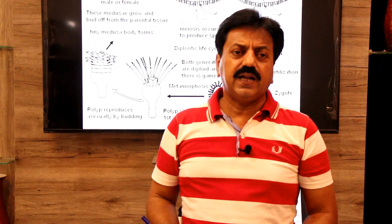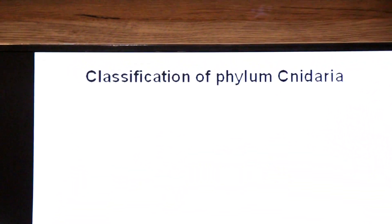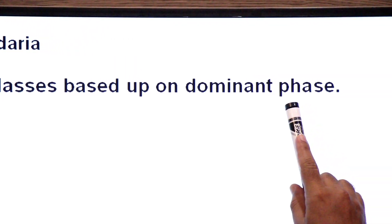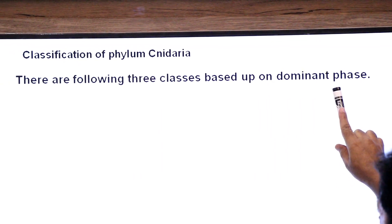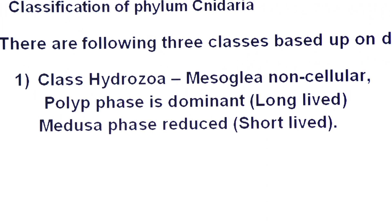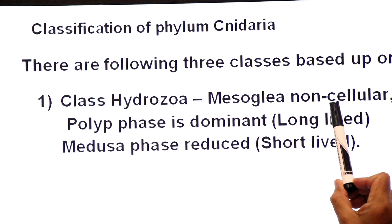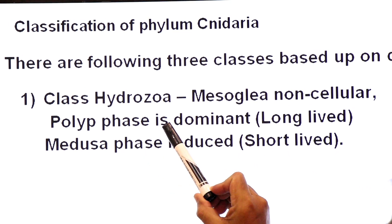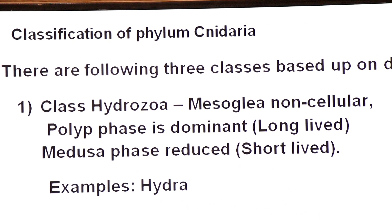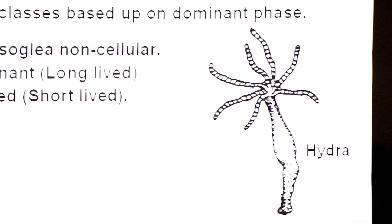Now we will study the classification of phylum Cnidaria. There are three classes based on the dominant phase — the long-lived phase is the dominant phase, and the short-lived phase is the reduced phase. Class one is Hydrozoa. Here the mesoglea (jelly-like layer) is non-cellular — without cells. In this class, the polyp phase is dominant (long-lived) and the medusa phase is reduced (short-lived). The example is Hydra.